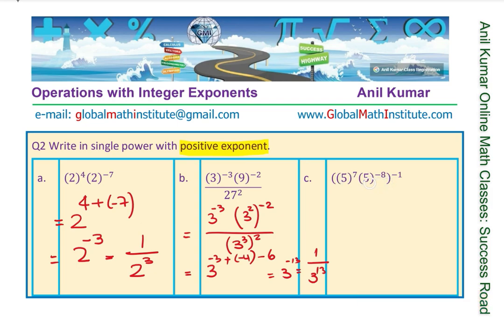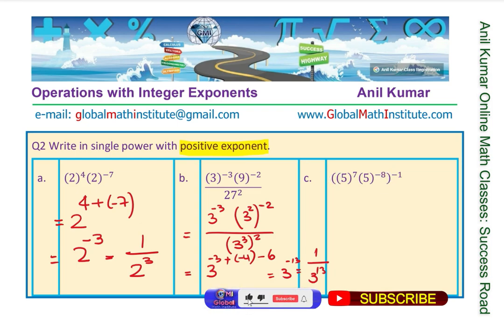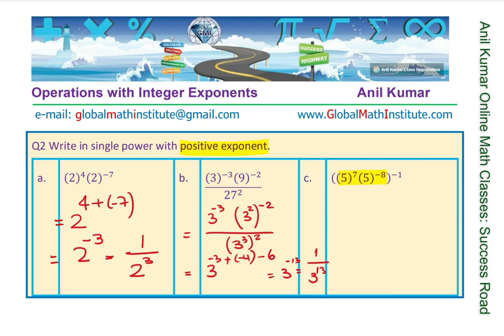The next one: we have the same base 5, and the exponents are 7 and minus 8. Notice this particular bracket — all these terms are within the bracket. So let's do inside the bracket first: 5 to the power of 7 minus 8, which gives minus 1. Then we have to the power of minus 1 outside, so it is 5 to the power of minus 1 to the power of minus 1, which gives us 5 to the power of 1, written simply as 5.